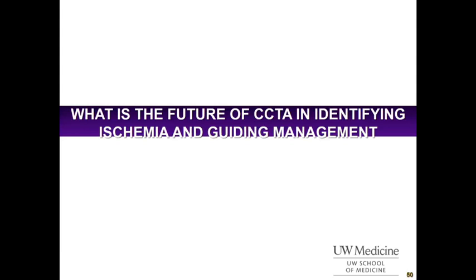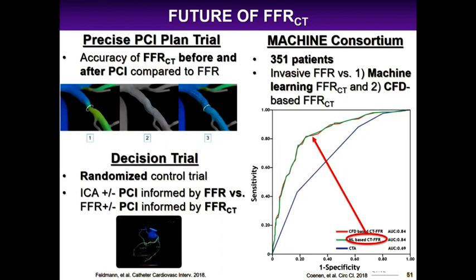What's the future of coronary CTA for identifying ischemia and guiding management? The CICE-PCI trial is ongoing, looking at accuracy of FFR CT before and after PCI compared to invasive FFR. The DECISION trial is a randomized controlled trial comparing PCI informed by invasive FFR versus PCI informed by FFR CT — virtual PCI. The MACHINE consortium study, published last year, looked at 351 patients comparing machine learning-based FFR CT versus computational fluid dynamics-based FFR CT. The machine learning approach produced ROC curves overlapping almost completely with computational fluid dynamics, suggesting we may not need to wait hours for analysis in the future.